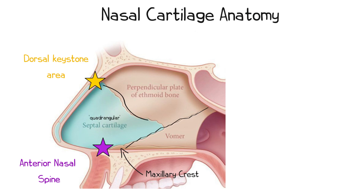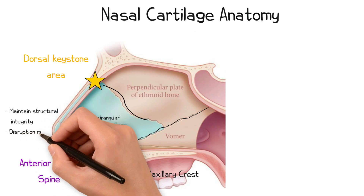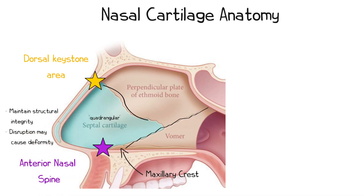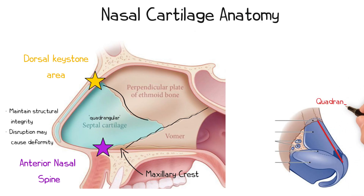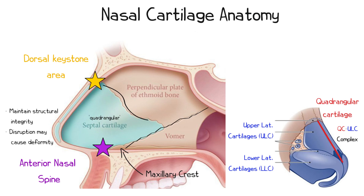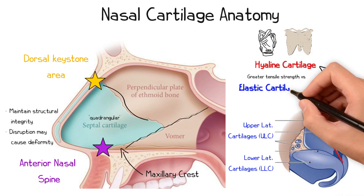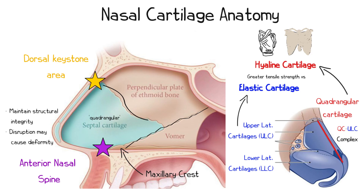These attachments are vital for maintaining the structural integrity of the external nasal framework, and disruption of these connections can lead to deformities that affect the shape and stability of the nose. The relationship between the quadrangular cartilage and the external nasal cartilages is particularly important. The quadrangular cartilage articulates with the upper lateral cartilages, the ULCs, forming the QC-ULC complex. It also inserts between the medial crura of the lower lateral cartilages. It's important to note that the quadrangular cartilage consists of hyaline cartilage, like the larynx, sternum, and ribs, which has greater tensile strength compared to the elastic cartilage of the upper and lower lateral cartilages, which is more akin to that of the pinna.